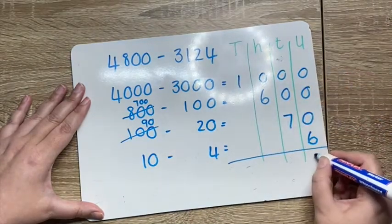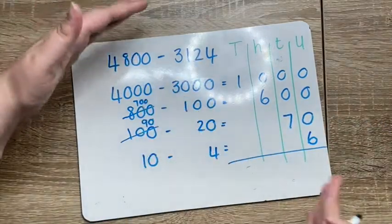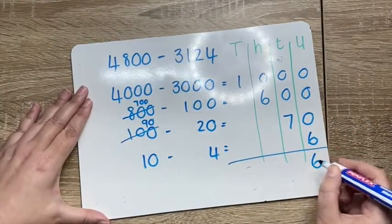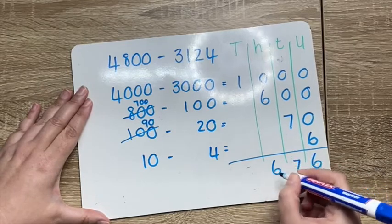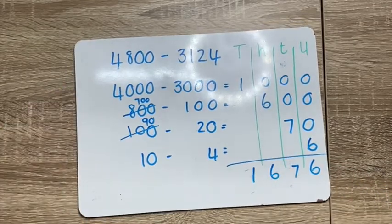Okay, and then remember we took the numbers apart. Now we have to put them back together. 6, 7, 6, 1. And there we go.